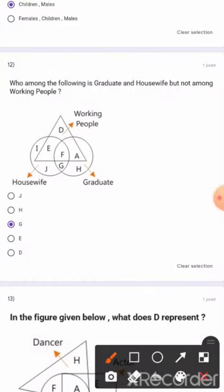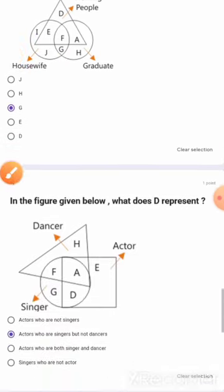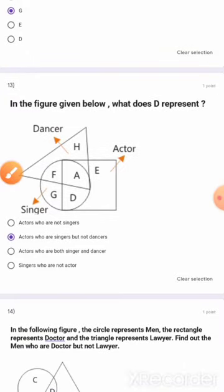Question 12: Who among the following is graduate and housewife but not working people? It means J.